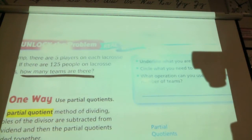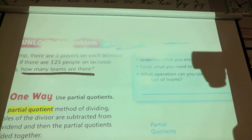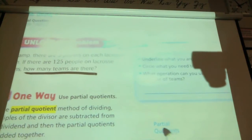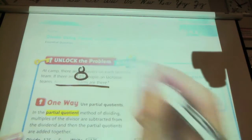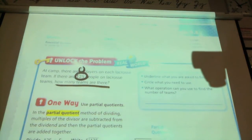Then it tells us, circle what you need to use. What information from this problem do we need to use? Raise a quiet hand when you know. Five and 125, which I just crossed off the five with my circle. Go ahead and circle five and 125.